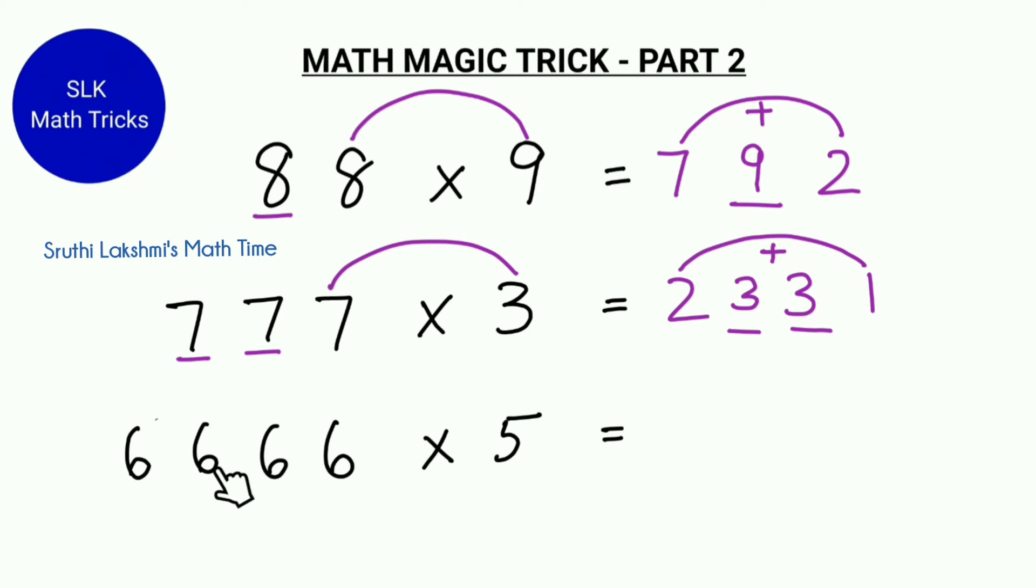So let's try 6666 into 5. So we first do 6 into 5 which gives us 30. Then we see how many 6s are there to the left of this 6. There are three 6s. So we come to know that there will be three numbers in between. So we add 3 plus 0 which gives us 3. So we fill the 3s in the three spaces. So that means 6666 into 5 is 33330. See how easy this method is?